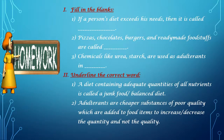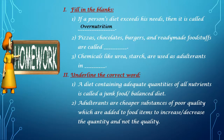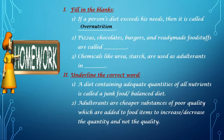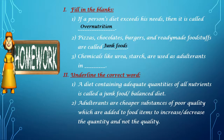Now students, here is homework for you. The first question is fill in the blanks. First: if a person's diet exceeds his needs, then it is called over-nutrition. Second: pizzas, chocolates, burgers and ready-made foodstuffs are called junk foods. Third: chemicals like urea and starch are used as adulterants in milk.